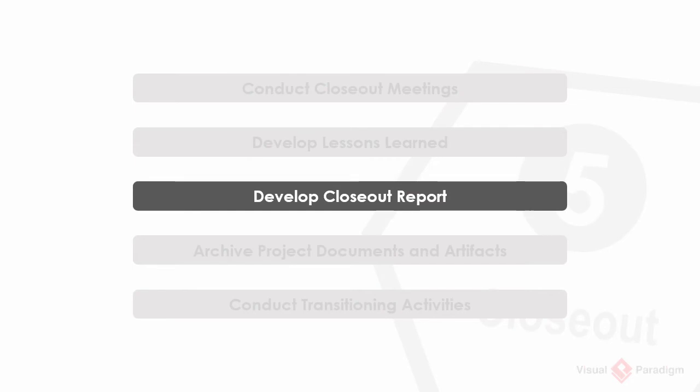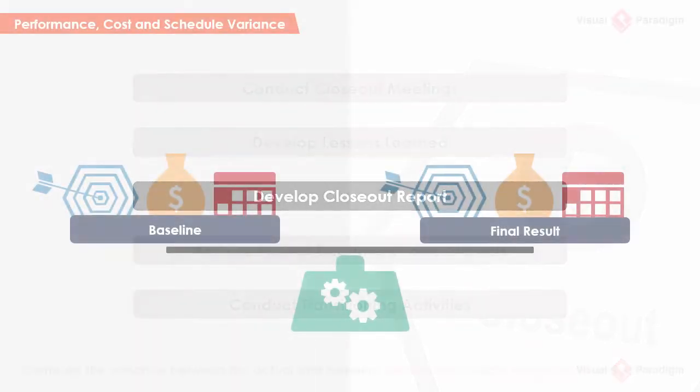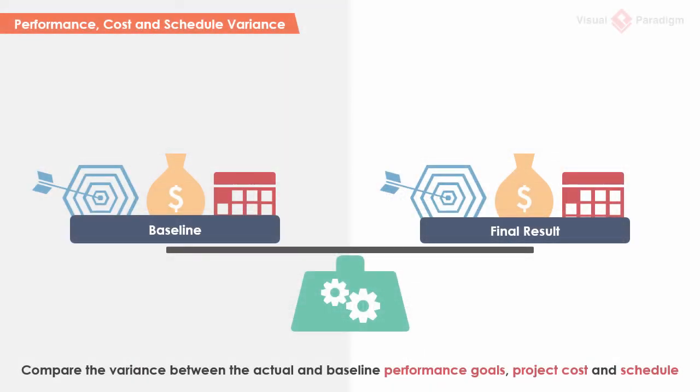Develop closeout reports. The deviation between project result and project plan is inevitable. Part of this activity involves identifying the variances from the baseline plans in terms of project performance, project cost, and schedule. Besides stating the planned and actual figures, it is important to state the variances and, most importantly, an explanation of why such variances exist.